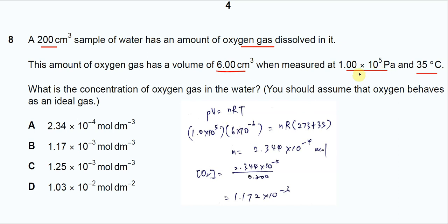Substitute the pressures given, the volumes given. cm³ need to convert to meter cube. So 6 times 10 power of negative 6 equal to n. n is what we need to find, the moles of oxygen with the gas constant with the temperature in Kelvin, 273 plus 35.